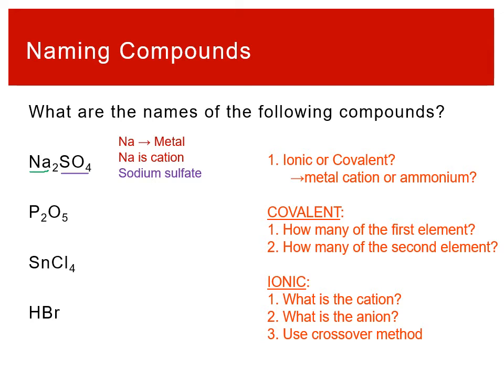If we go to the next one, P₂O₅ — P, phosphorus, is not a metal. So this is not a metal, meaning that this has to be covalent. The question is, how many do I have? I take the two P's and then I take the five. I convert those into my prefixes. The two becomes diphosphorus and the five becomes penta for pentoxide.